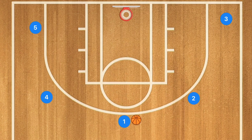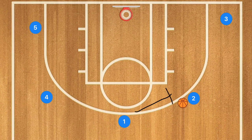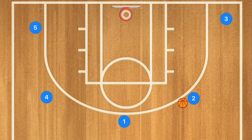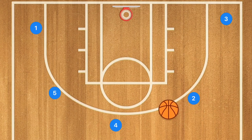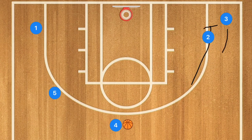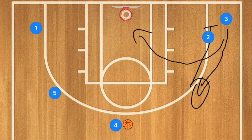There are three basic motion offenses you can run off the five out: pass and cut, pass and screen away, and pass and screen four. If player one passes to player two, he can cut towards the rim, screen four, or screen away. If he cuts to the rim, player four fills the spot up top, player five fills player four's spot, and player one fills player five's spot. On a screen away, player two passes to player four and screens away — player three fills that spot or drives towards the rim.